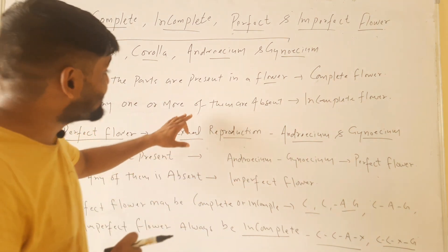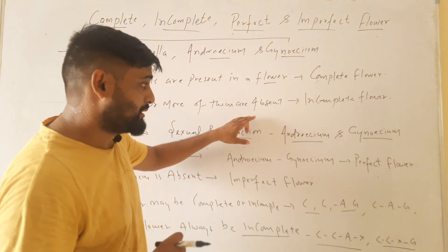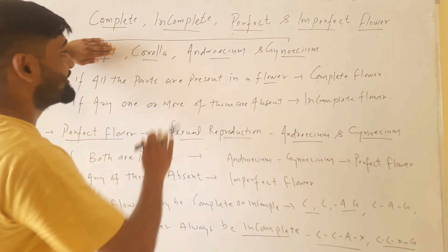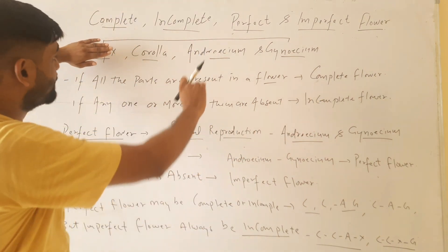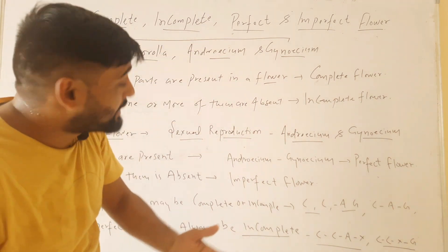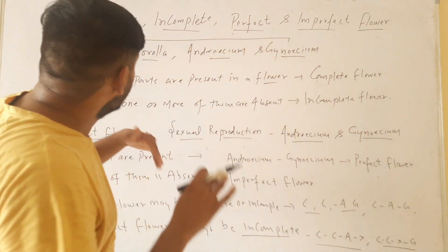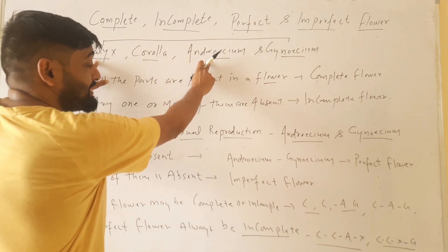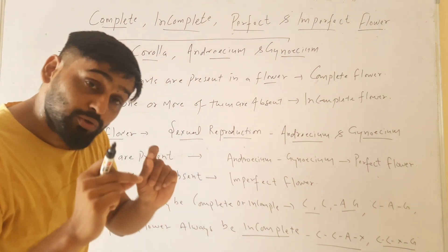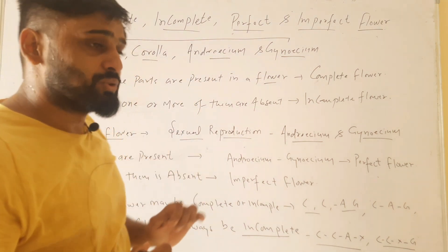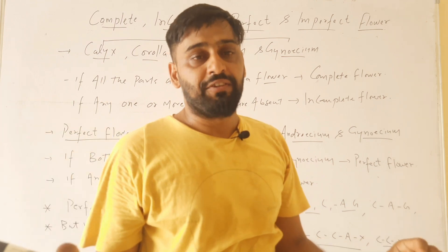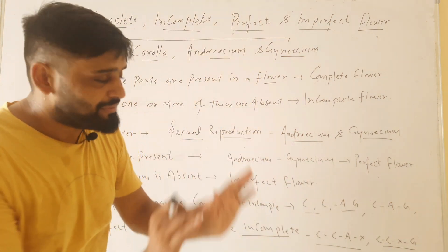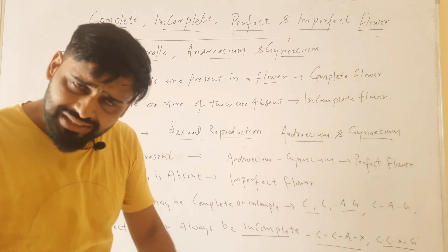If any one of them, or more than one, is absent, then it will be called an incomplete flower. If calyx is not there, it will be incomplete. If corolla is not there, it will be incomplete. Suppose calyx and androecium both are absent — it will also be called an incomplete flower. So: all parts present means complete; any one or more missing means incomplete.